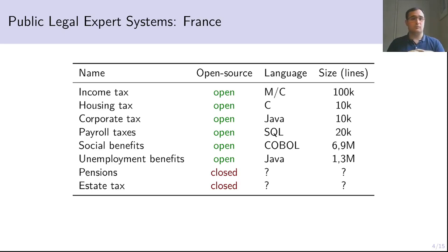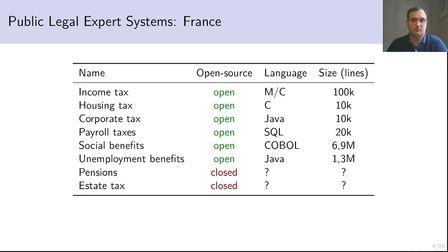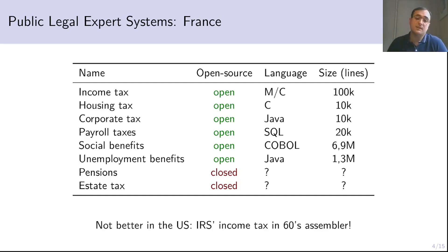As you have seen in the previous example, turning law into code is a difficult task, and it is a task that is done regularly by employees of large organizations in the public and private sectors all across the world. For instance, in France in the public sector, all of those algorithms are in production and they compute various taxes and social benefits. They are coded up in diverse languages which can be very old, like COBOL, and their size is very respectable — we're talking about dozens or hundreds of millions of lines of code. And the US situation is no better. The IRS income tax is implemented in an assembler of a computer from the 60s.